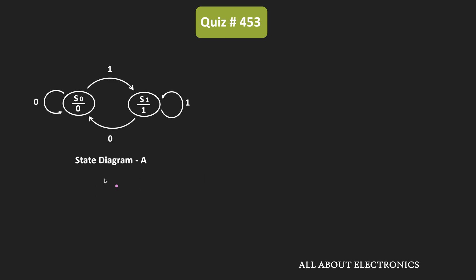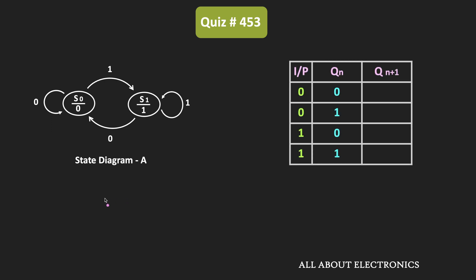Here, let's say the present state of the flip-flop is equal to Qn. And from the state diagram, as you can see, the flip-flop has one input. That means it can be the D flip-flop or the T flip-flop. So for one input and the present state, we have a total of four different possibilities.